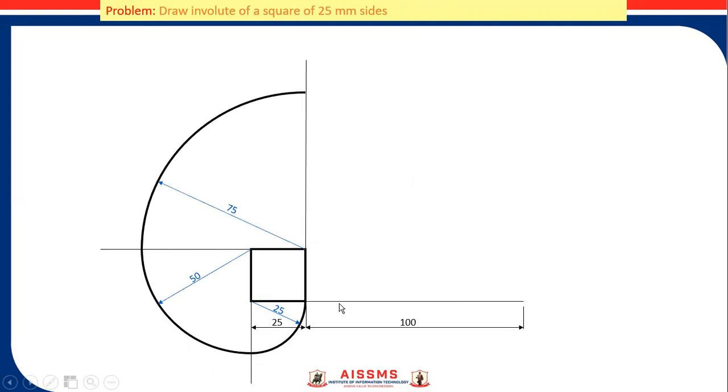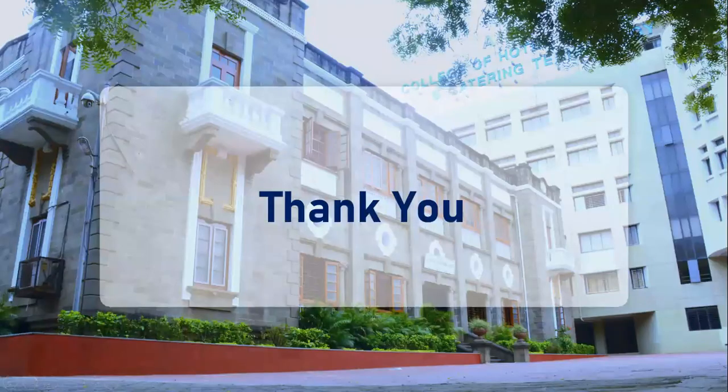Then in compass, that is four. This is four point. Take 25 times 4, that is 100 mm radius in your compass, and draw an arc up to the last line. This is the required involute. Thank you for watching this video.